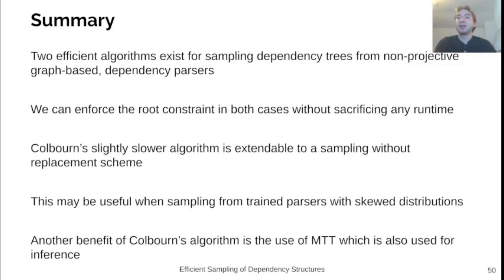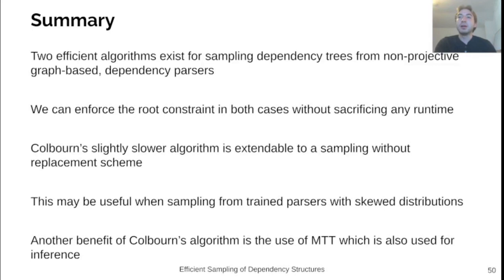In this talk, we extended two sampling algorithms for dependency trees to enforce the root constraint, which is needed for many dependency schemes such as the universal dependency scheme. While Colburn's algorithm is a bit slower than Wilson's algorithm, we are able to adapt it to efficiently sample without replacement. This generally reduces the number of samples needed to approximate the distribution over trees, and there are no repeated samples. Thank you very much for listening. Our paper and code can be found using either the QR codes or the links on this slide.